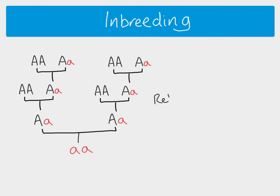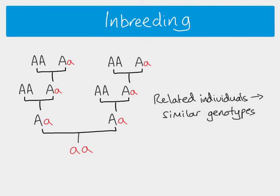What we can see here is that related individuals are going to have similar genotypes. This is just one gene, the A gene. Obviously individuals have got hundreds of thousands of genes. But if you've got very related individuals, it is highly likely that they are going to have alleles which are the same for many of their genes. And this is where the idea of inbreeding comes in.